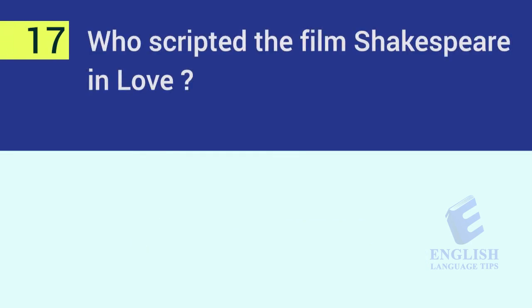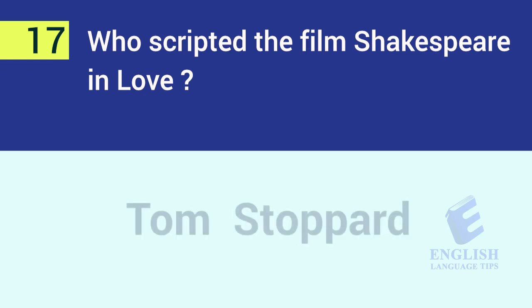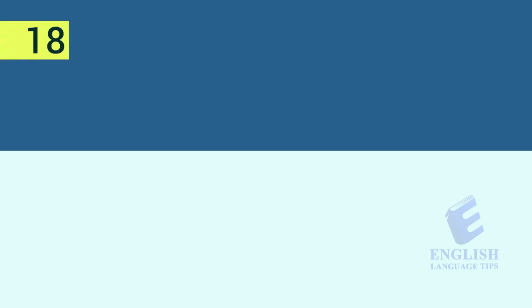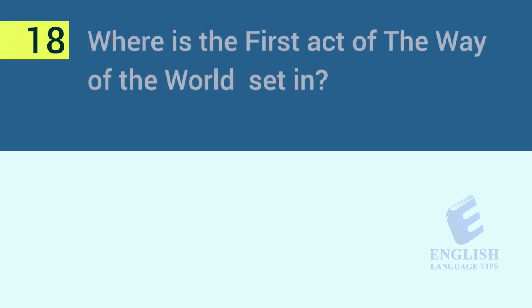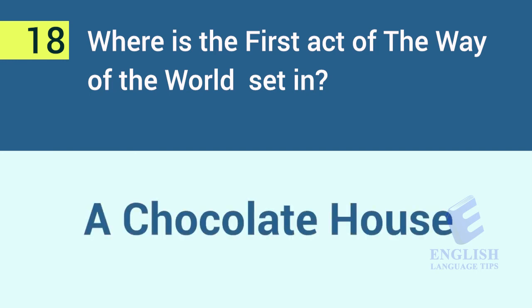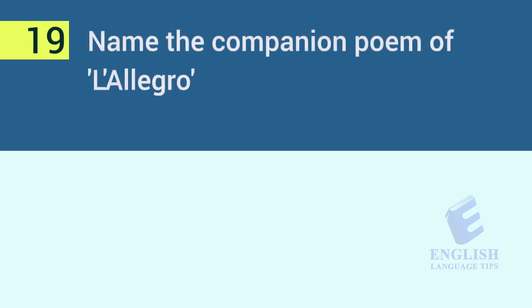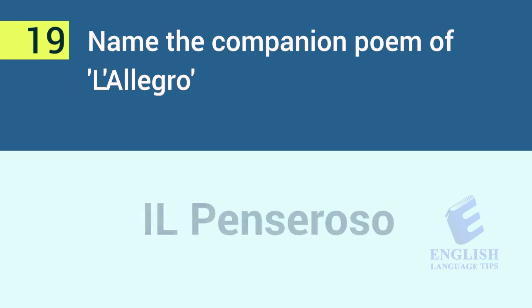Question 17: Who scripted the film Shakespeare in Love? The answer is Tom Stoppard. Question 18: Where is the first act of The Way of the World set in? The answer is a Chocolate House. Question 19: Name the companion poem of L'Allegro written by Milton. It is Il Penseroso.